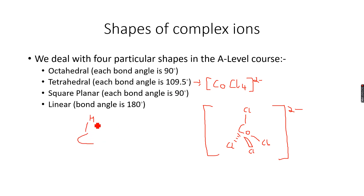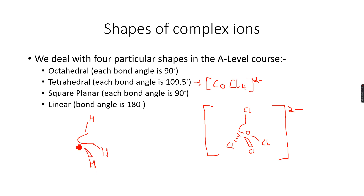Methane CH₄ has four hydrogen atoms arranged tetrahedrally around the carbon. This is a tetrahedral molecule, and similarly CoCl₄²⁻ is a tetrahedral complex ion.